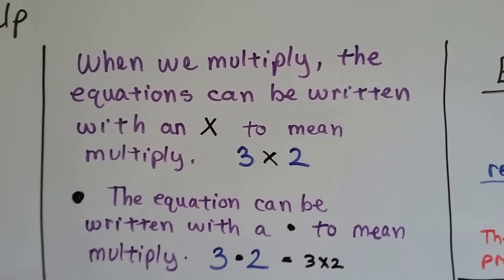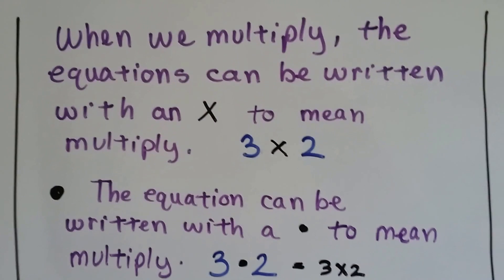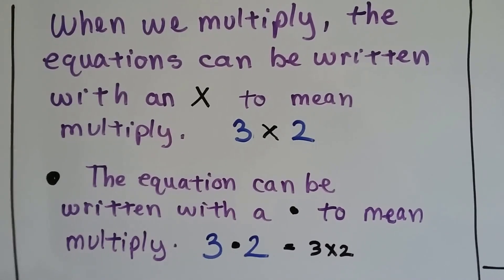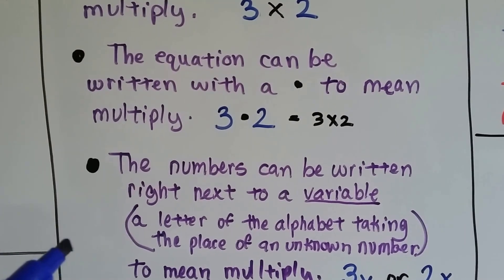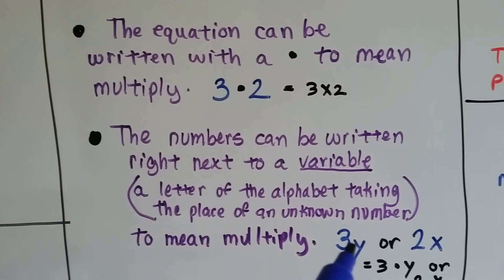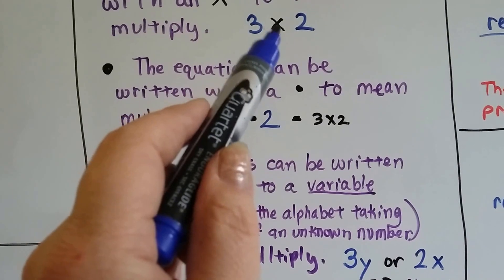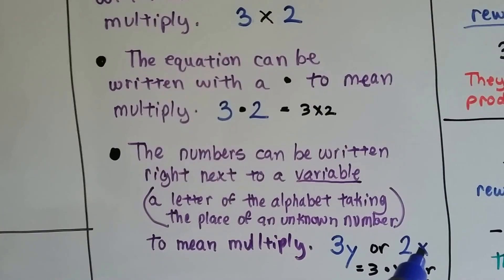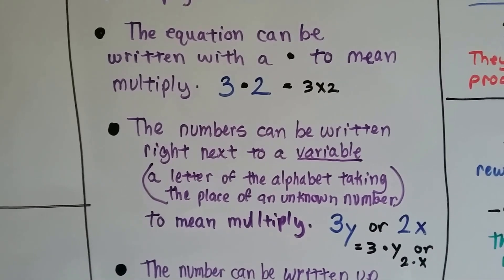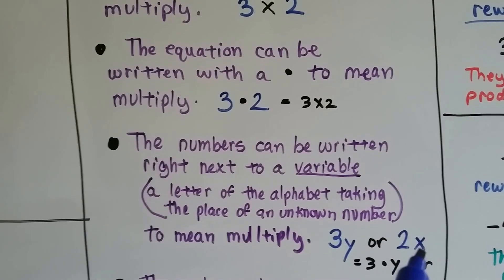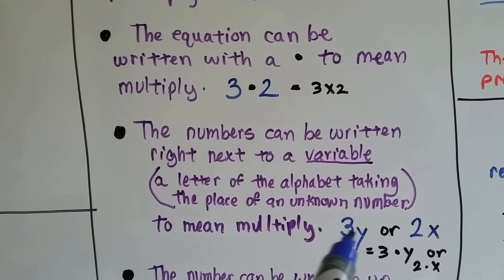When we multiply, equations can be written with an × to mean multiply — so 3 × 2 means three times two. The equation can also be written with a dot: 3·2 still means three times two. Numbers can be written right next to a variable — a letter of the alphabet that takes the place of an unknown number — so 3y means three times y. If it says 2x, we don't want to use × to mean multiply anymore, because x could be a variable. In algebra, x, y, a, and b are used as variables the majority of the time. So get into the habit of writing something other than × for multiplying. This is grown-up math — the × is going away as multiplication. We'll use dots or just put the numbers next to each other.